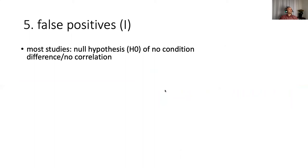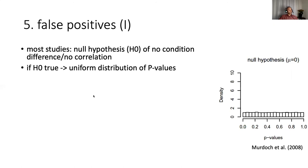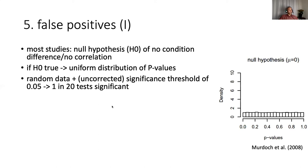Now the final thing I want to say, the final topic from my paper at least is false positives. In most studies, sleep EEG or otherwise, the null hypothesis is that there's no condition difference or no correlation with behavioral metrics or things like that. Now it's important to remember that if the null hypothesis is true, so if there is no population effect, you expect a uniform distribution of p-values like shown on the right here. So this means that if you take random data that does not have an effect and you use an uncorrected significance threshold of 0.05, on average one in 20 tests should come up significant.